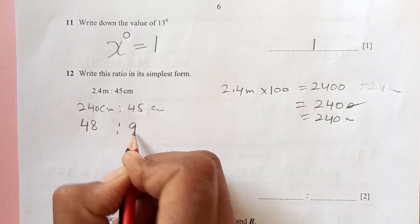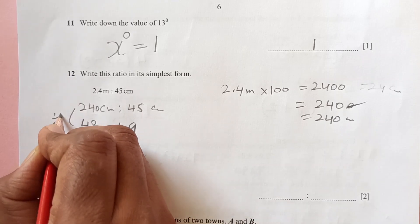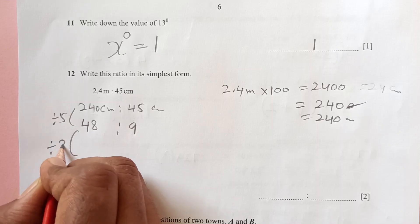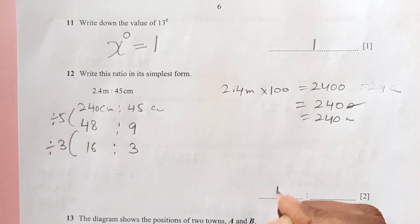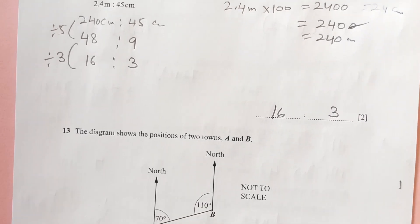Divide it by 5, we can divide by 5. So 5 times 48 is 240, 5 times 9 is 45. Divide both sides by 5. Here we are going to divide it by 3, so 16 ratio 3. So 16 ratio 3 is the final answer in simplest form.